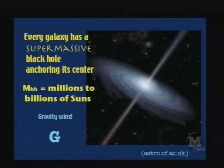Now let's zoom in and see what happens inside galaxies. We've accounted roughly for the formation of the universe and galaxies — let's go further in. It turns out that in the middle of every galaxy there's a supermassive black hole anchoring its center. Supermassive here refers to a mass scale from about millions to billions of times the mass of the sun.